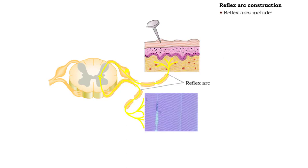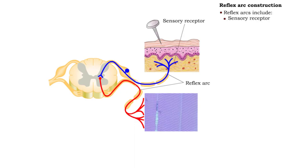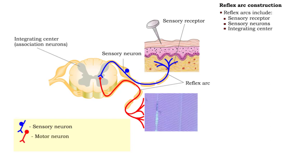All reflex arcs include five functional components: sensory receptor, sensory neuron, integrating center, motor neuron, and effector.